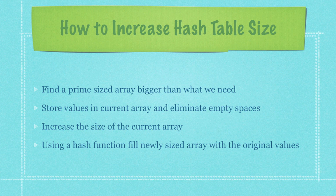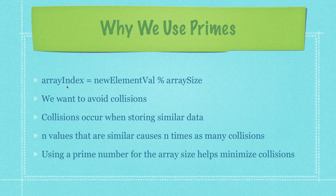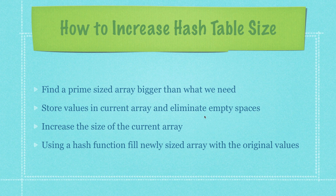So that brings us to how we're going to increase our hash table size. We're in a situation where we want to put 30 items into a 30-item hash table and would like to increase that to 60. Basically, we need to find a prime-sized array bigger than the requested size, store the values from the current array, eliminate empty spaces, increase the array size, and then use a hash function to fill the newly-sized array with the original values.